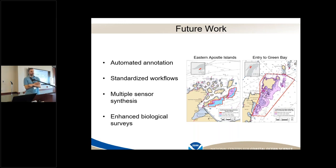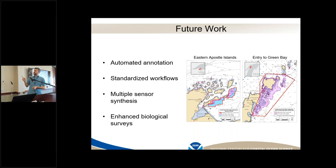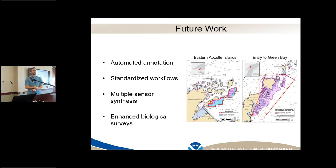We're also interested in standardizing our workflows — there are lots of different people working on this project and we want them using the same decision rules and coming up with similar outputs. For many of these locations we're combining multiple sensor types: LiDAR, potentially aerial imagery, and multi-beam echo sounder information. We're thinking about ways to integrate all those datasets to create a seamless map of the things people are interested in. Enhanced biological surveys are another component — we want to know where the fish are, where the mussels are, and those things aren't always measured the same way as a geophysical parameter.